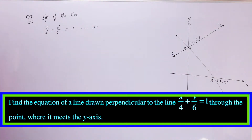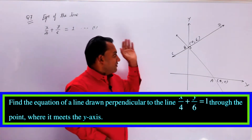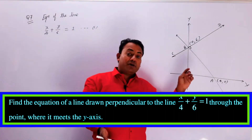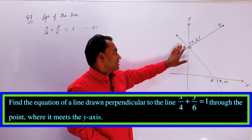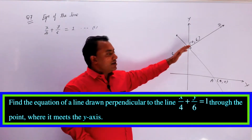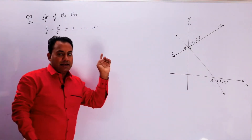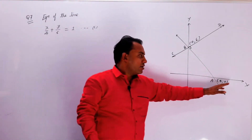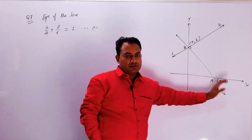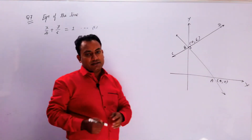इस question में बच्चों कहा गया कि आपको एक line की equation बतानी है, जो given line पर perpendicular हो, लेकिन perpendicular वहाँ हो जहाँ given line y-axis को intersect करती है। तो हमें CD की equation बतानी है, जबकि line AB given line है। वो x-axis को (4,0) पर, जबकि y-axis को (0,6) पर intersect करती है।